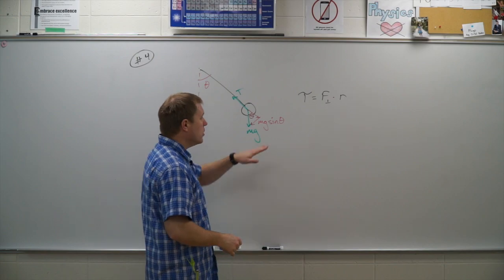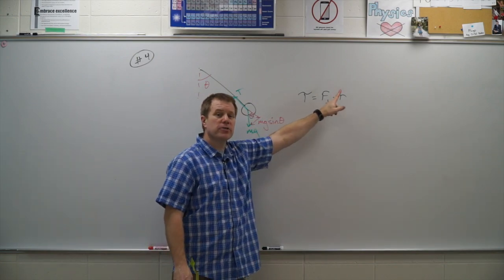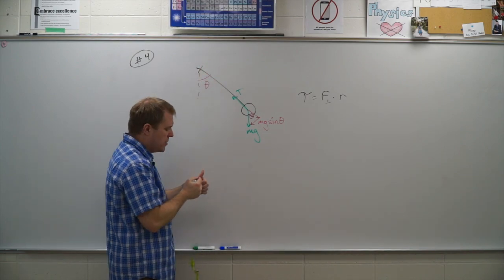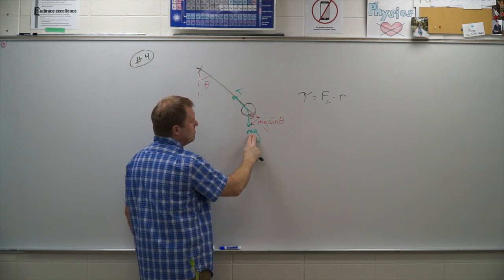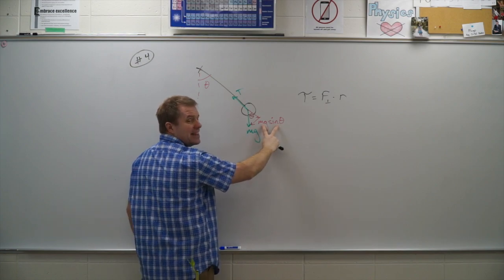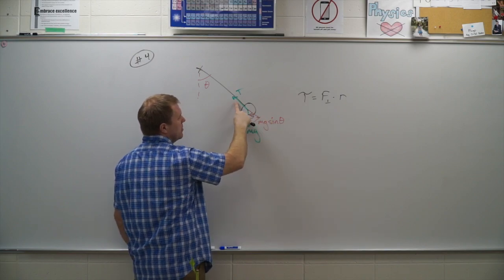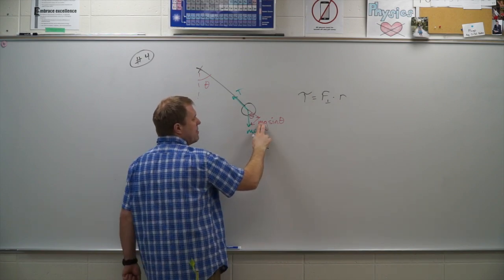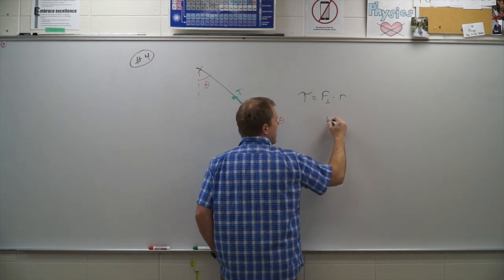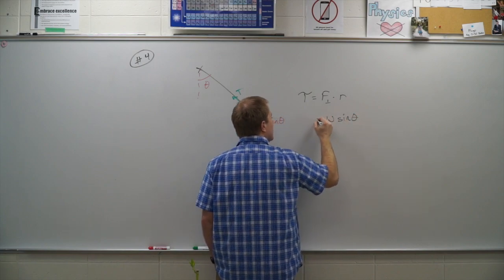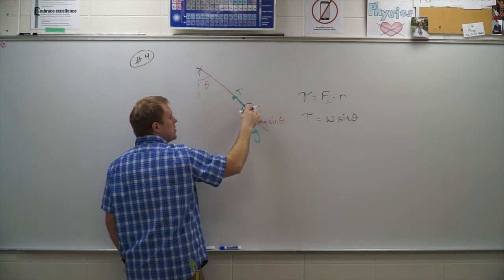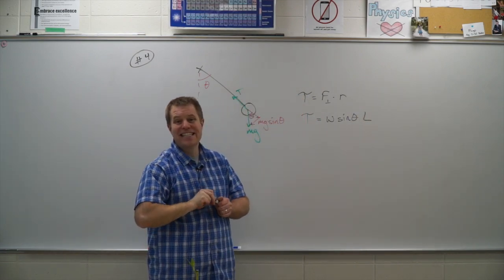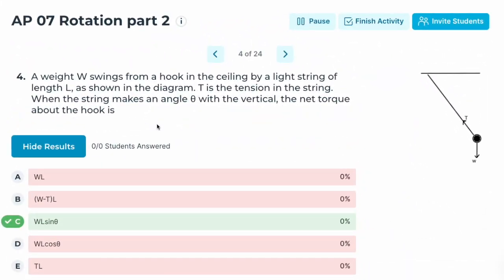To find torque, we need the perpendicular component of the force times its distance from the axis of rotation. The axis of rotation is at the top. The force causing torque is mg (or weight W), but only the mg·sinθ component is perpendicular. Tension is not perpendicular so it produces no torque. The distance from the axis to the ball is the string length L. So the net torque is W·L·sinθ. Correct answer: C.